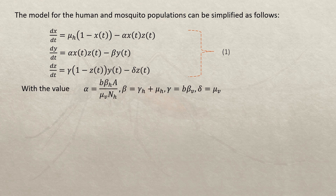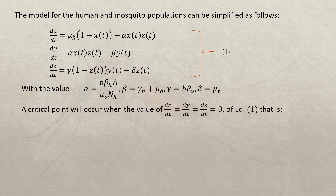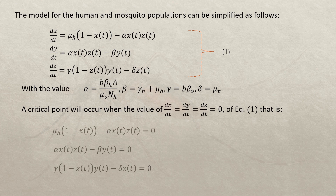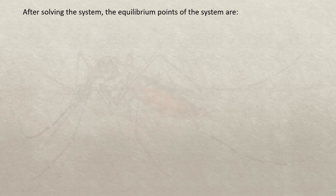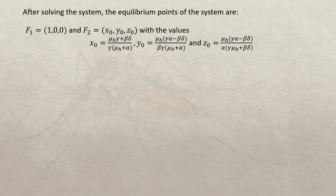Let's call this system of equations 'Equation 1.' A critical point or equilibrium point occurs when the left-hand side equals zero, giving us the system we call 'Equation 2.' After solving the system, the equilibrium points are F1 and F2. F1 is the disease-free equilibrium point, and solving Equation 2 gives us X-naught, Y-naught, and Z-naught as the second equilibrium point.